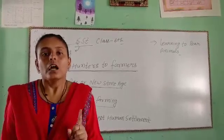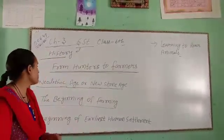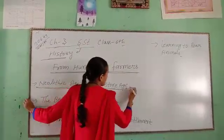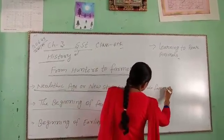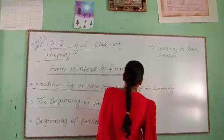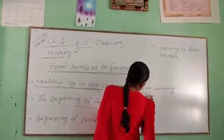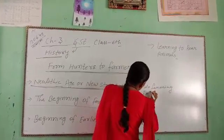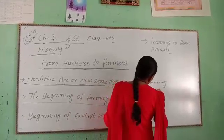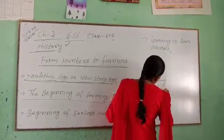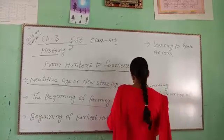Man's life changed due to major achievements like the beginning of agriculture, the invention of the wheel, and the making of pottery. In this age, people learned how to do farming, make tools, make pots, and the invention of wheels — a very important development of the new stone age.